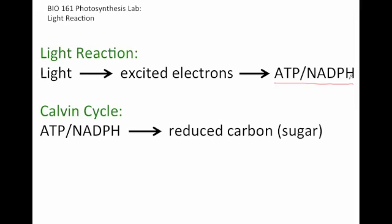Then also inside the chloroplast is the Calvin cycle, and that's where the energy in ATP and NADPH is used to take carbon dioxide out of the atmosphere and reduce it. And those reduced carbons are what make sugar, like glucose.